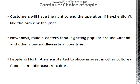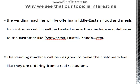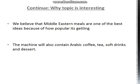Now, why we see our topic as interesting: the smart food vending machine is interesting because it will be offering Middle Eastern food and meals for customers, and the food will be heated and ready to eat. Some examples of the food will be falafel, shawarma, kabab, and other kinds of food. Also, it will be designed in a way that makes the customer feel like they are ordering from a real restaurant, by giving the customer the opportunity to order meals, side dishes, and drinks from the vending machine.